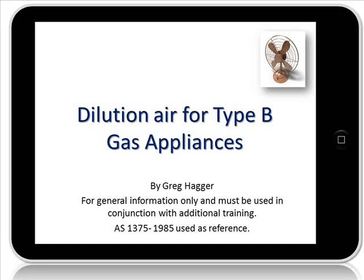In this presentation I will discuss the basic dilution air requirements for type B gas appliances. This information is of a general nature and should only be used with additional training. The Australian standard that will be used is AS1375.